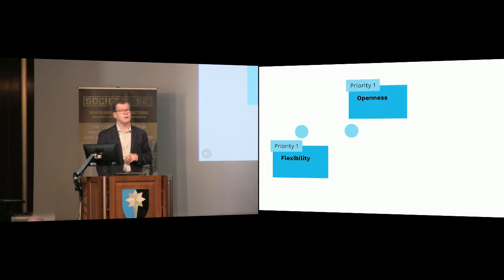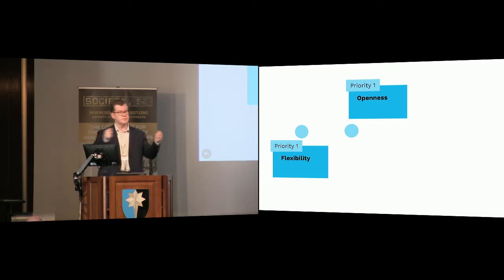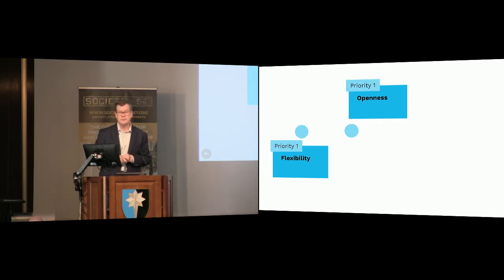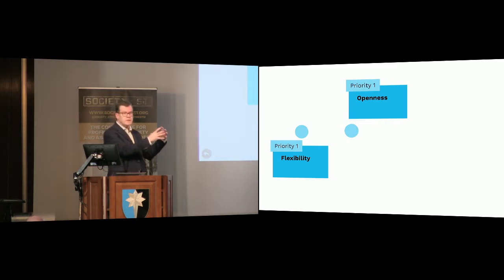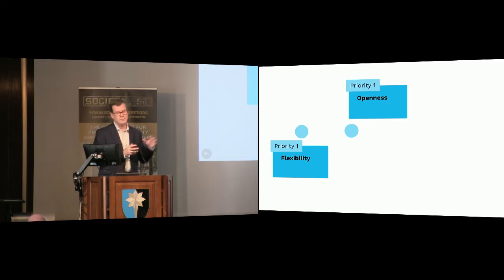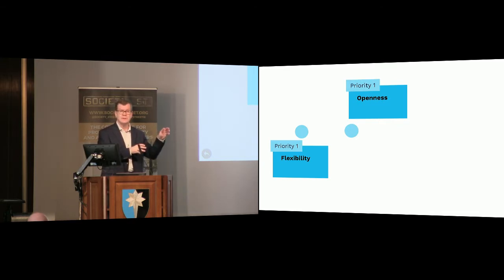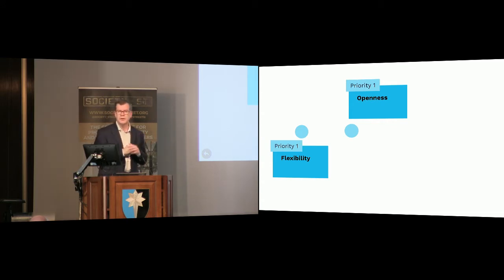The second first priority — these are all priority one — is openness. In today's world you've got to have a system that's open enough to talk to other systems. You will have multiple systems which need to talk to each other — we've had to build about 200 interfaces to other systems. Make sure you're not buying something with its own proprietary language that doesn't talk well with others. We're currently working with an organization in the US with another application that is incredibly closed — it doesn't have an open API, we can't just reach in and get or send information, we have to build something that pushes its way in.